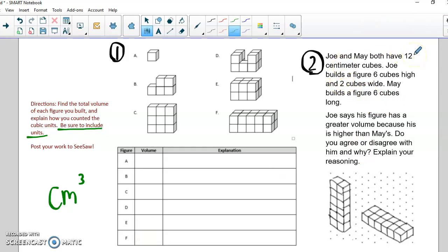And then number two, Joe and May both have 12 centimeter cubes. Joe builds a figure six cubes high and two cubes wide. This is Joe's. May also has 12 centimeter cubes, but she builds a figure six cubes long. And this is a picture of May's at the bottom. Joe says his figure has a greater volume because his is higher than May's. Do you agree or disagree with Joe? Now, you can do this work on paper and then take a picture and upload it to Seesaw. Or you can do it straight on Seesaw. I look forward to seeing your work.